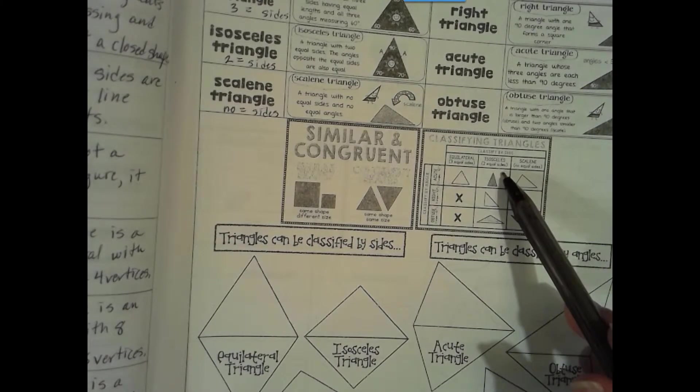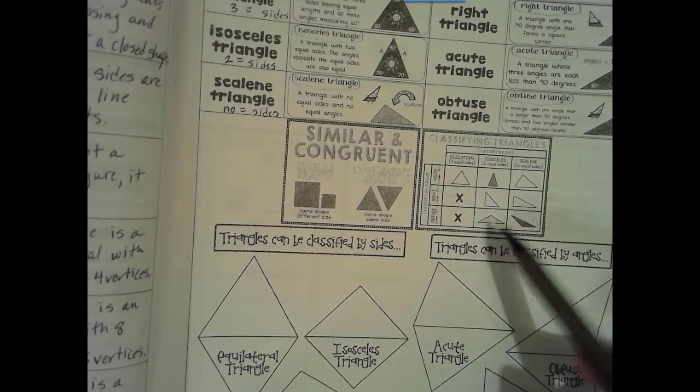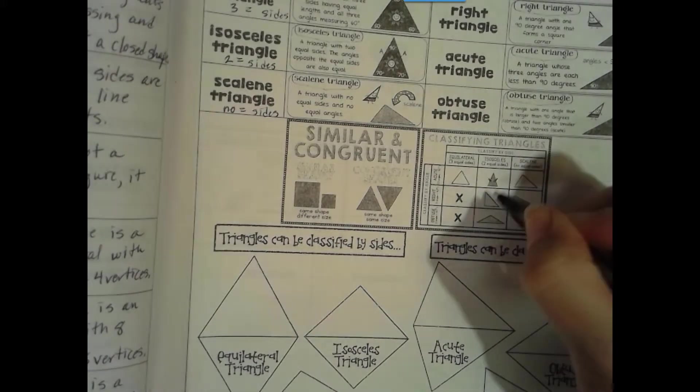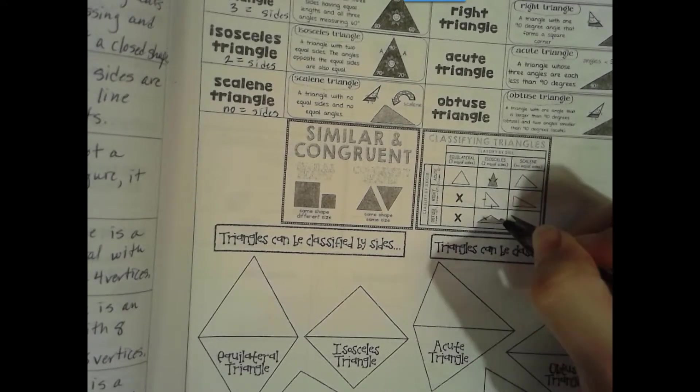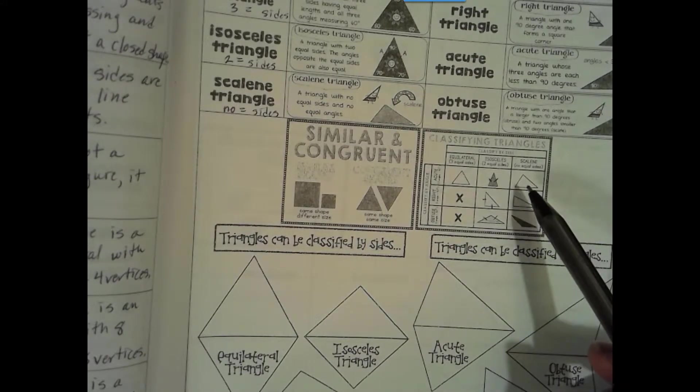But an isosceles triangle could be acute, it could be right, it could be obtuse, because it just has to have two sides that are equal in measure. And then scalene could be acute, it could be right, it could be obtuse.